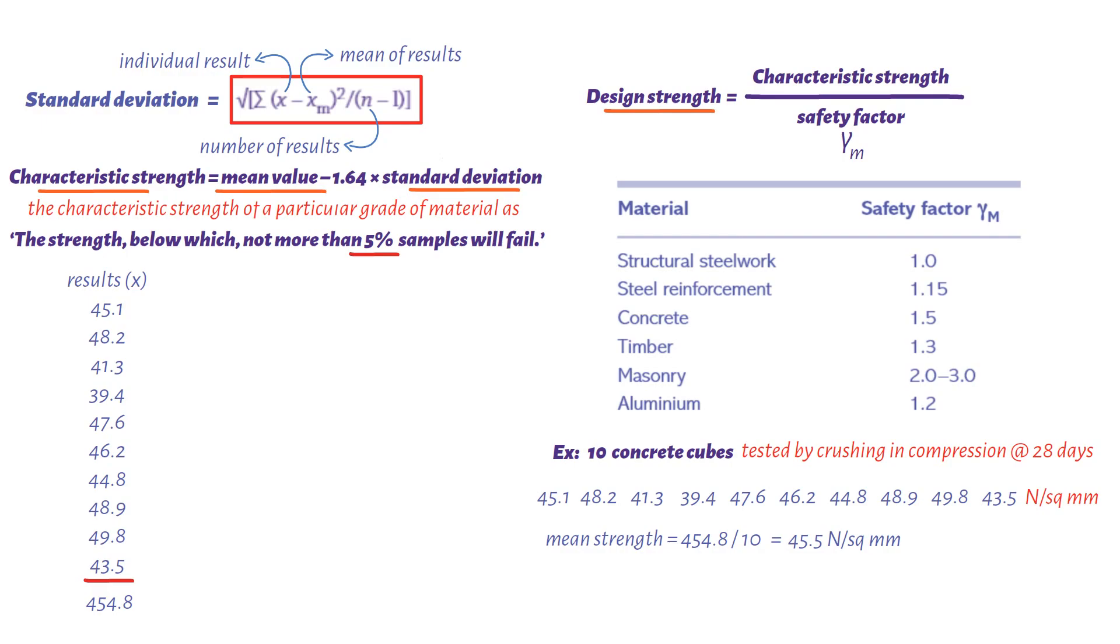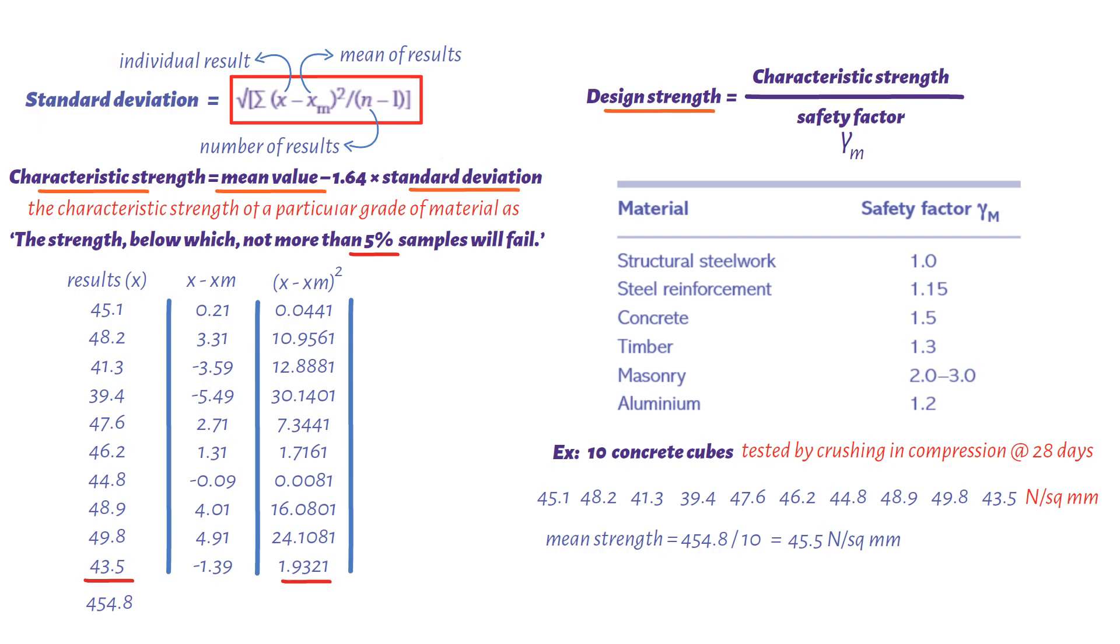Next, working out the standard deviation. If we construct a small table here and work out our values, the first column is result of every individual cube minus mean strength. The second column is equal to the value from the first column squared. We sum up the second column, so we have a total value of 105.22. So the standard deviation equals the square root of 105.22 divided by number of cubes minus 1. This gives us a value of 3.42 newton per square millimeters.